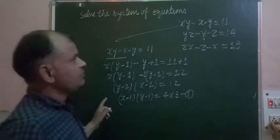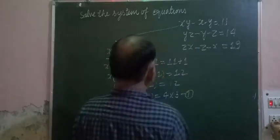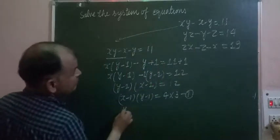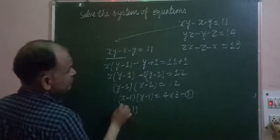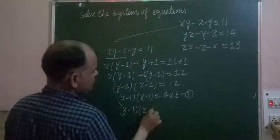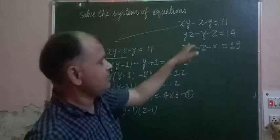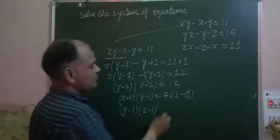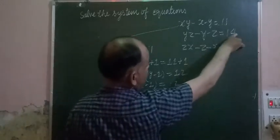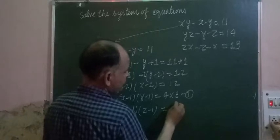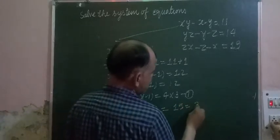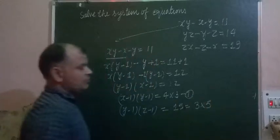Similarly, we work with the second equation. Following the same process, we get (y - 1)(z - 1) equals 15, which we write as 3 × 5.